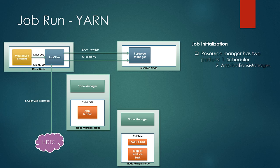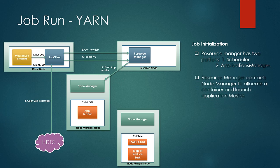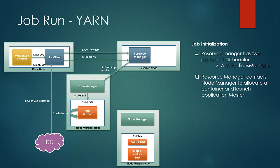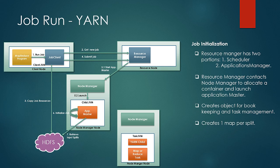Then comes the job initialization phase. The resource manager has two parts: the scheduler, which allocates resources, and the application manager, which monitors job status and progress. As soon as the job scheduler picks up a job, it contacts a node manager to start a new container and launch a new application master for the job. The application master creates an object for bookkeeping and task management, retrieves the splits from HDFS, and creates one task per split. If the job is small, the application master decides to run it on the same JVM itself, since the overhead of allocating a new container would cost more. These jobs are known as Uber jobs.